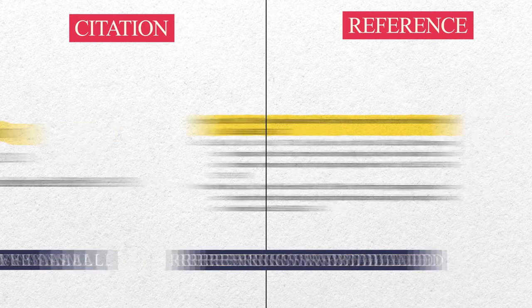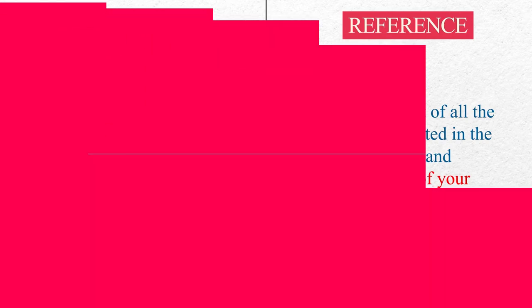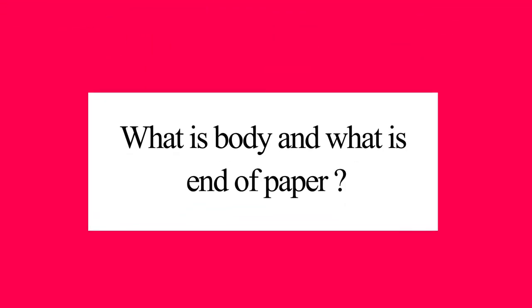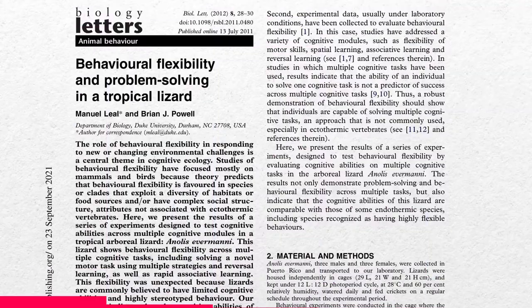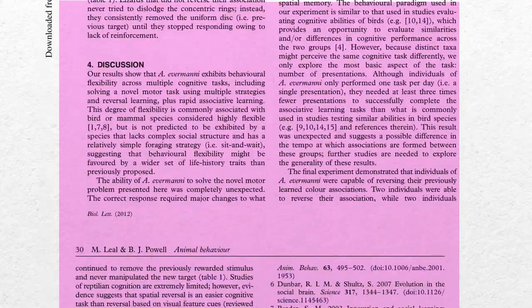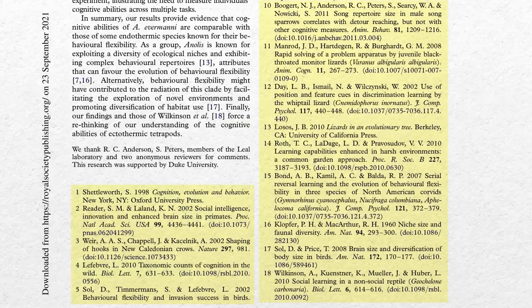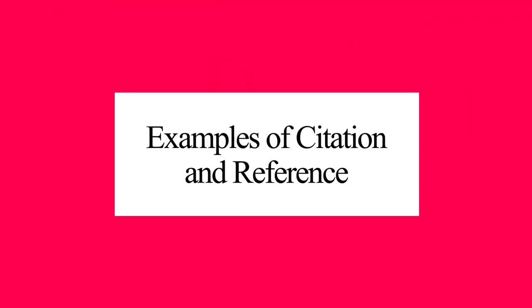If you look at the definition, you will find one key difference: citation appears in the body and reference appears at the end of your paper. If you take this paper as an example, the section from introduction to conclusion is the body, whereas reference is the last section of this paper.